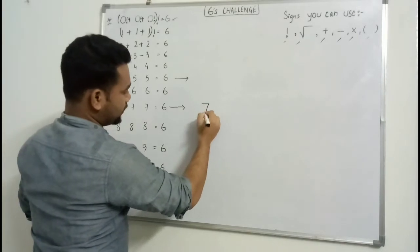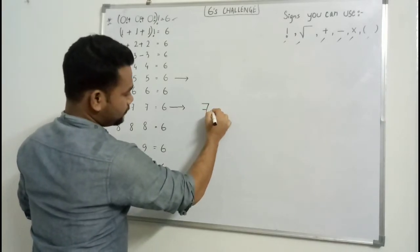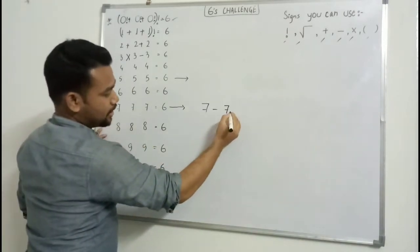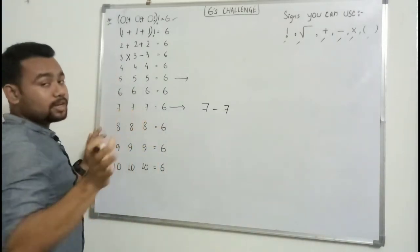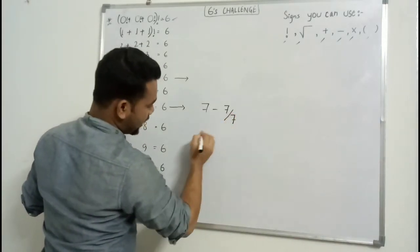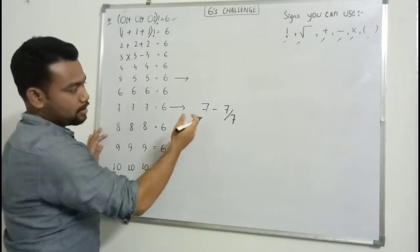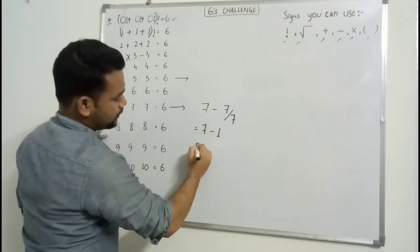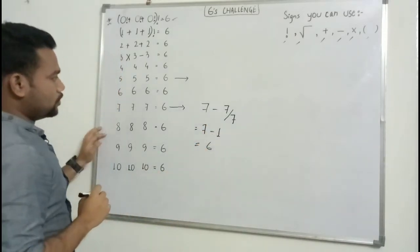Seven minus seven is zero. We need to use the three sevens anyhow, so I will use it like this way: seven minus seven divided by seven is seven minus one, and it gives six.